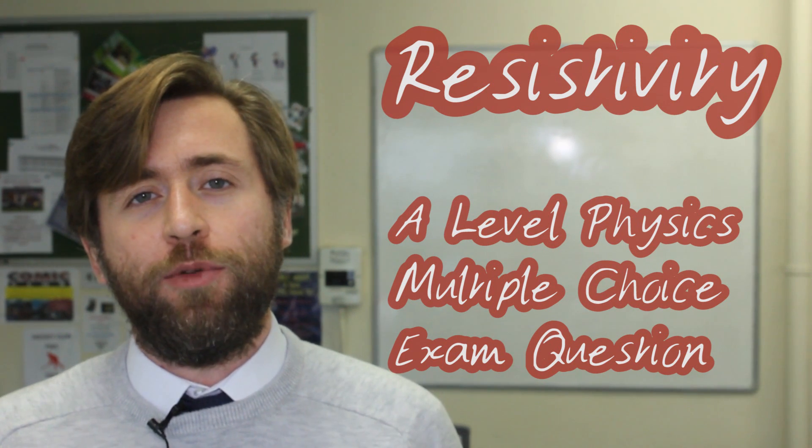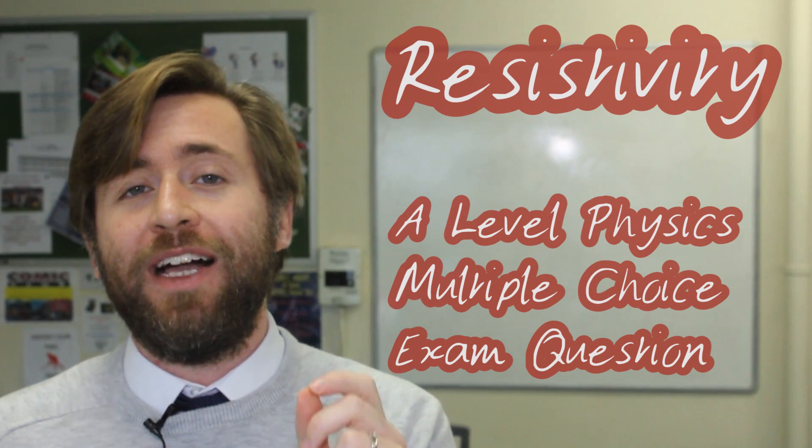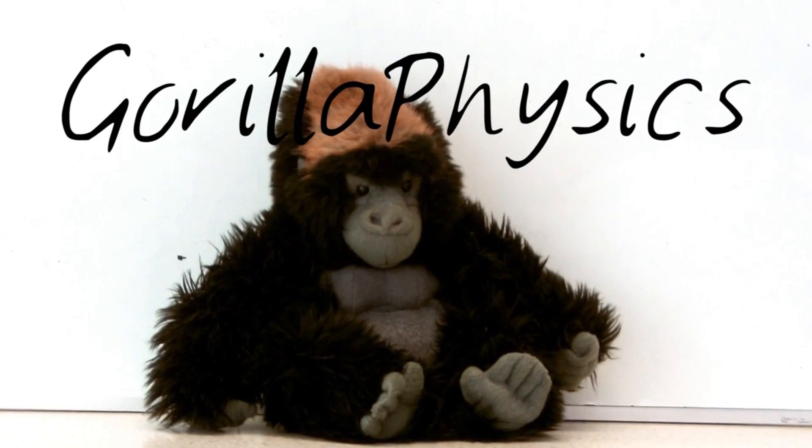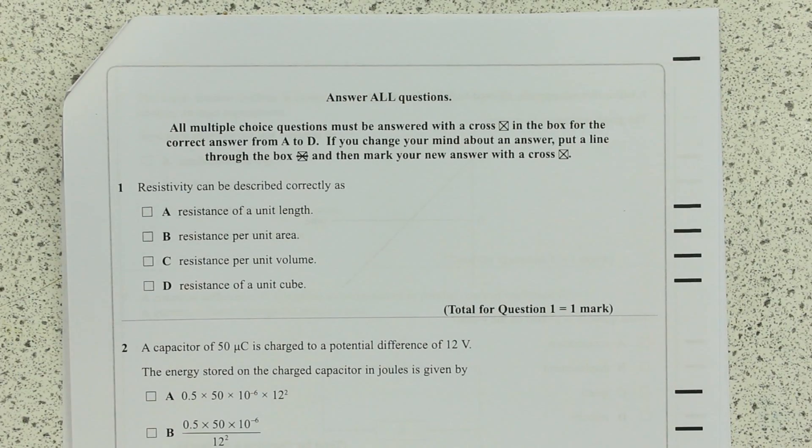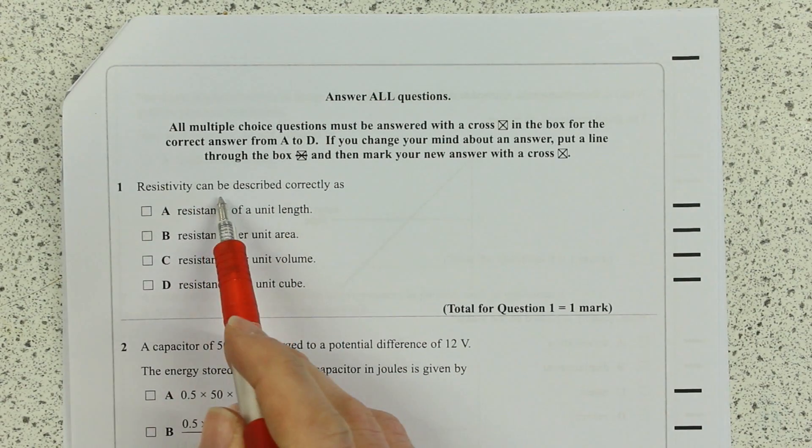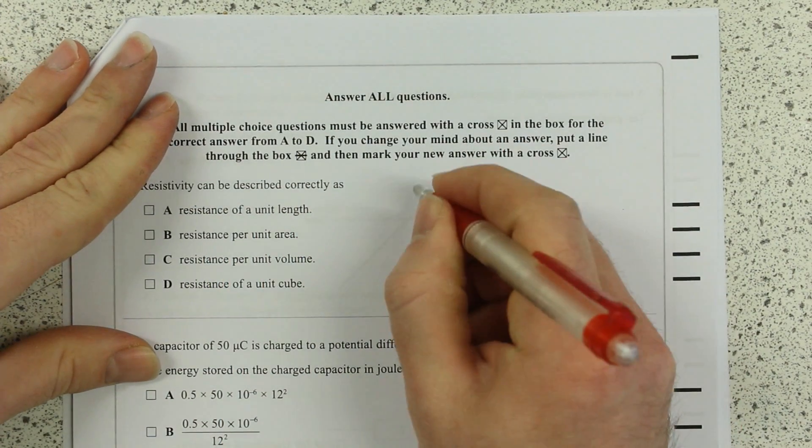So this is a multiple choice question. Make sure that you actually answer the question before you look at the answers and try to eliminate those distractors. This question asks you to define resistivity, and most candidates I've seen get the equation out and rearrange for rho, resistivity.